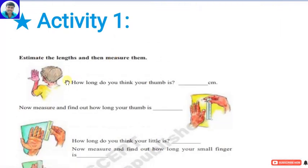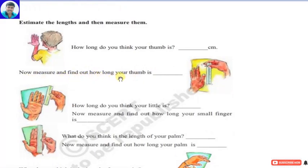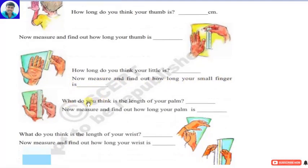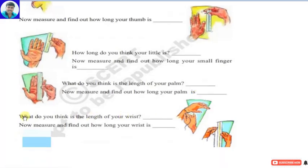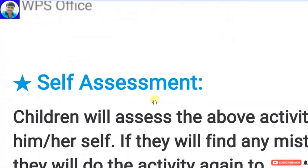Activity 1 is: estimate the lengths and then measure them. How long do you think your thumb is? The student estimates the length of the thumb. Then: now measure and find out how long your thumb is — the student measures using a scale. Similarly: estimate your little finger length, then measure it. Estimate the length of your palm, then measure it. Estimate your wrist length, then measure it.